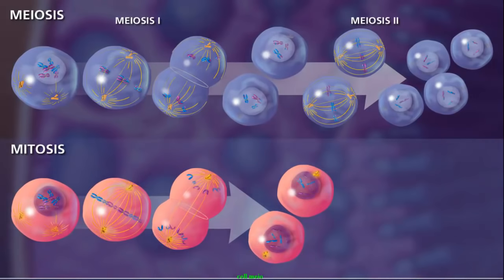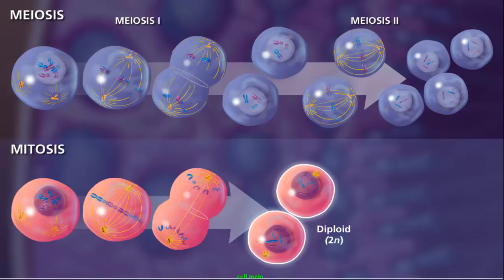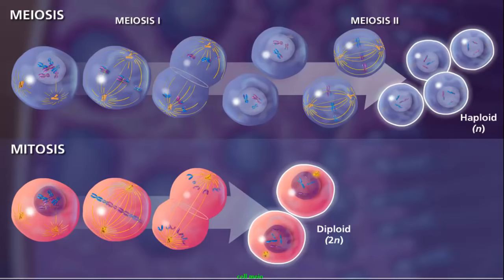Although the processes of mitosis and meiosis look similar, there are a few major differences. One obvious difference is that mitosis results in two diploid daughter cells, and meiosis results in four haploid cells.